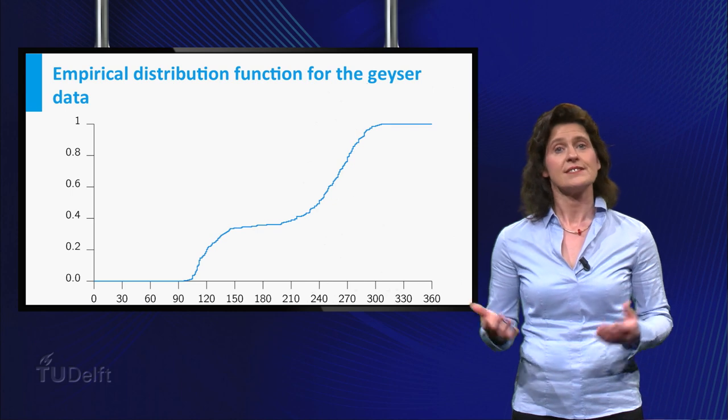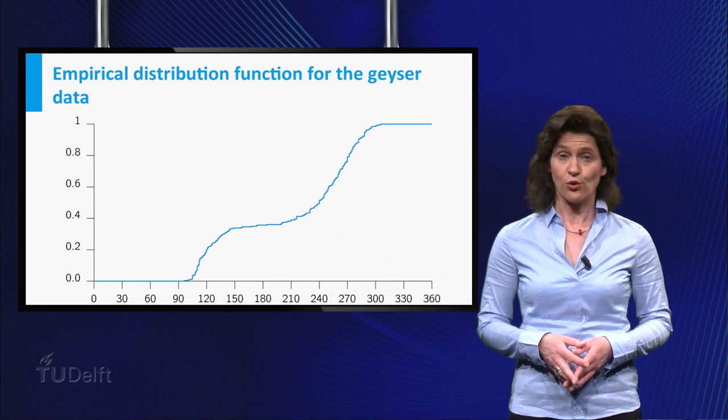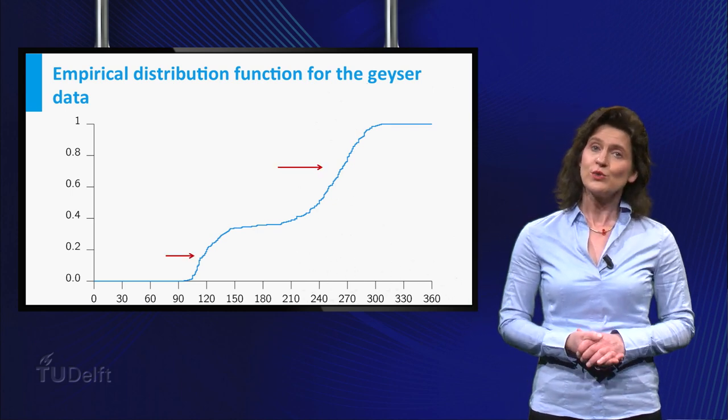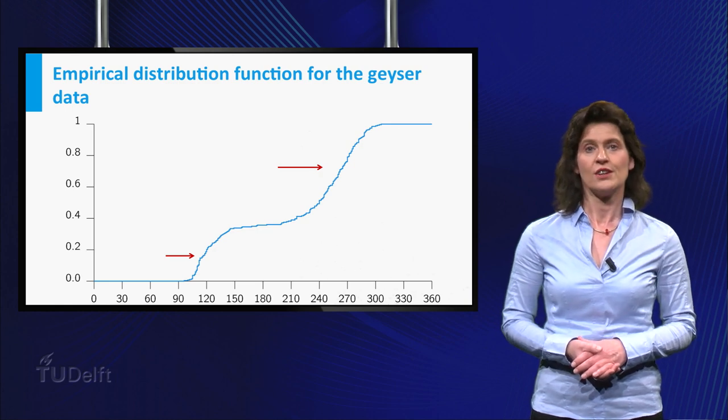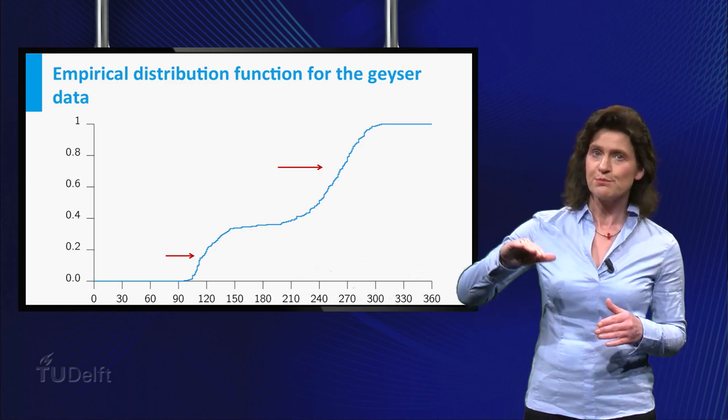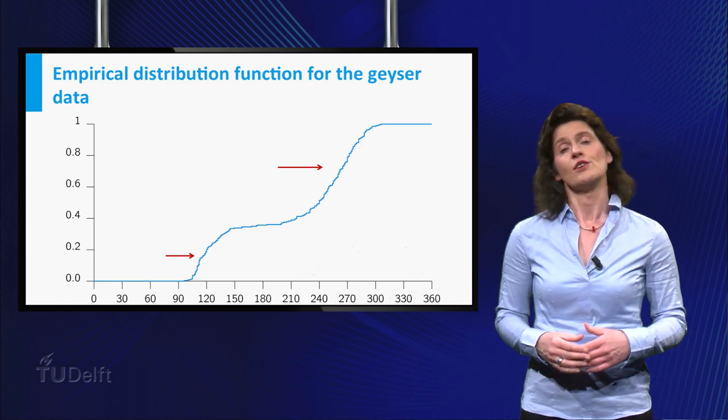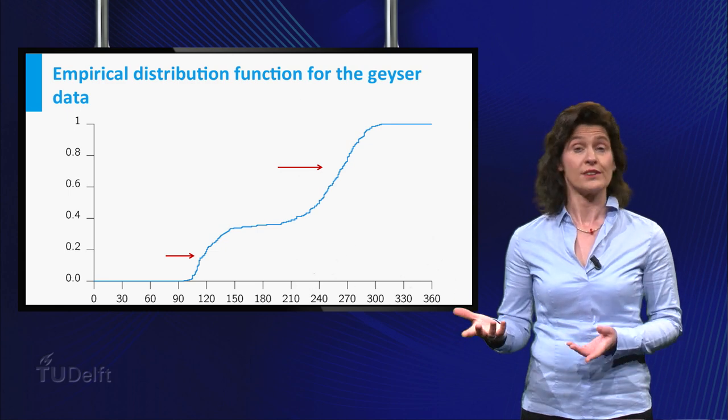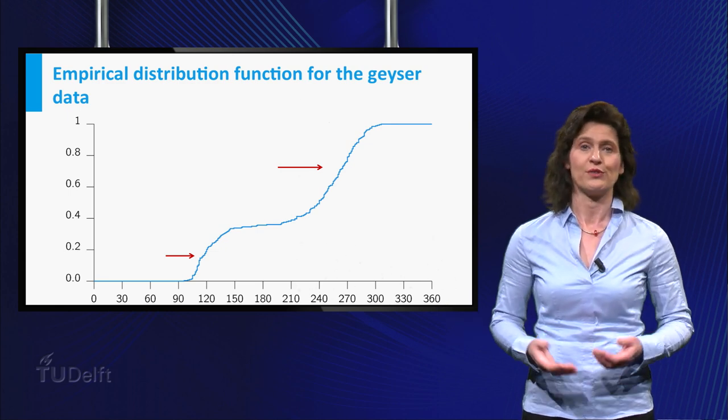And here is the empirical distribution function for the Old Faithful data. Let's see what you can read from this graph. You see there are two very steep slopes in the graph, around 120 and 270. You remember the value of the peaks.